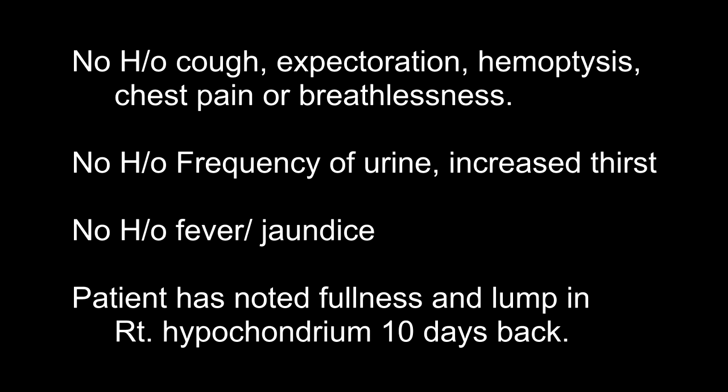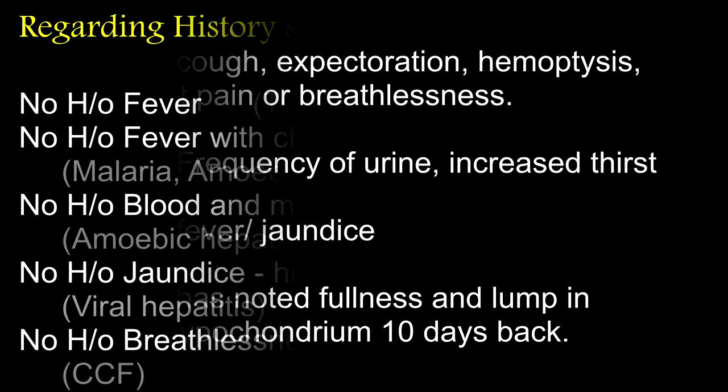What can be the causes of a lump in the right hypochondrium? Hepatomegaly, gallbladder lumps, right renal lump, and lumps arising from the colon and pyloric region of the stomach. Also there could be soft tissue swellings arising in the abdominal wall as anywhere else.